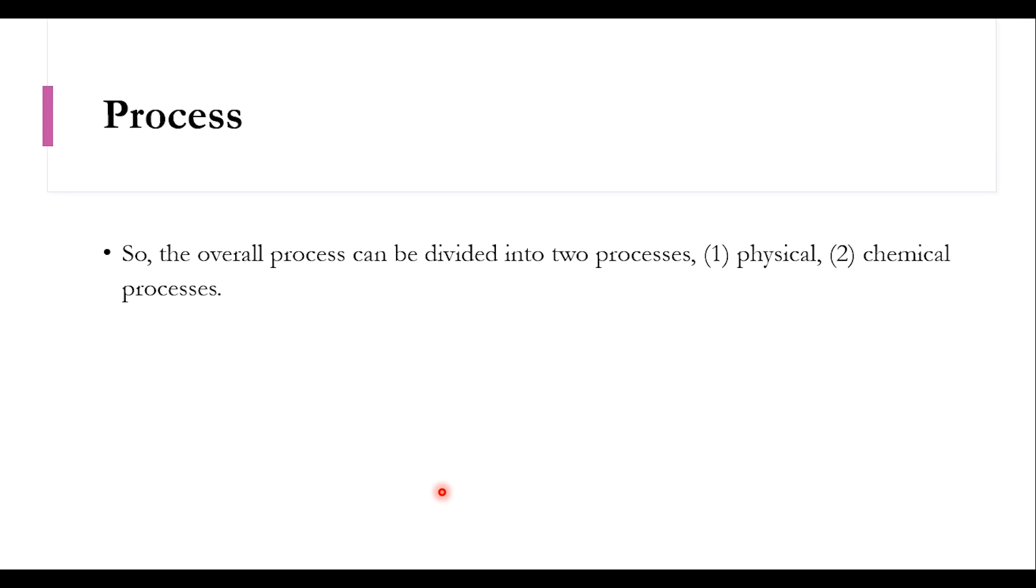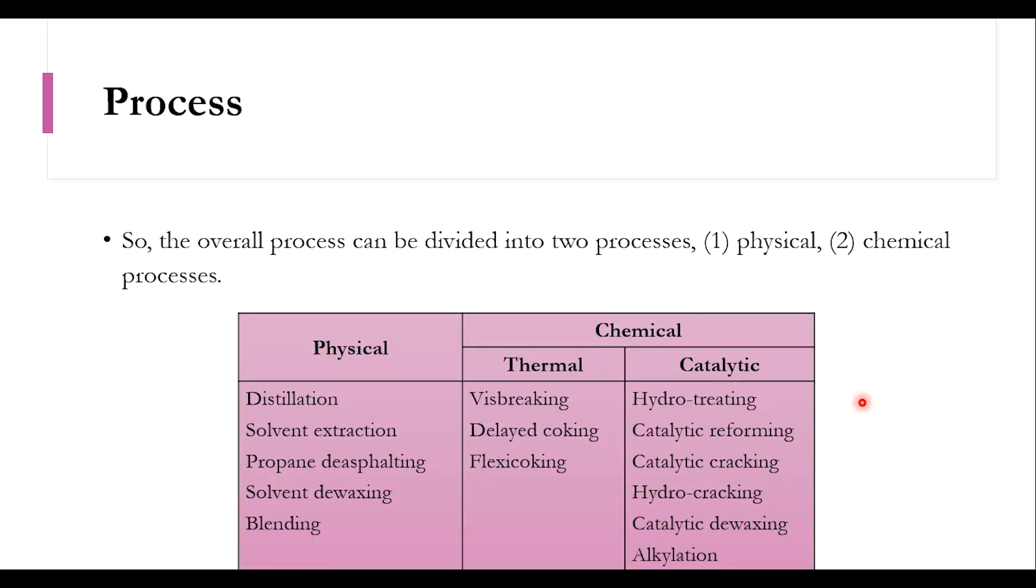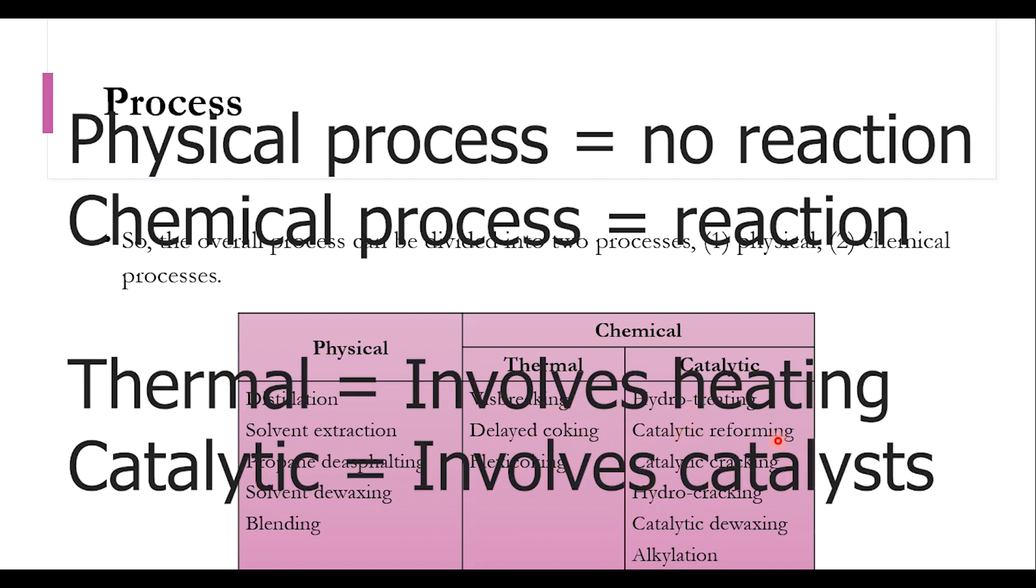Based on this refinery process we can divide the process into two types: the physical processes and chemical processes. Physical processes include distillation, solvent extraction, propane deasphalting, solvent de-waxing and blending. While the chemical processes are of two nature: thermal and catalytic. In thermal it includes visbreaking, delayed coking, flexi coking, while catalytic includes hydro-treating, catalytic reforming, catalytic cracking, hydro-cracking, catalytic de-waxing and alkylation. We will be learning these systems or processes once we get more and more into this subject.